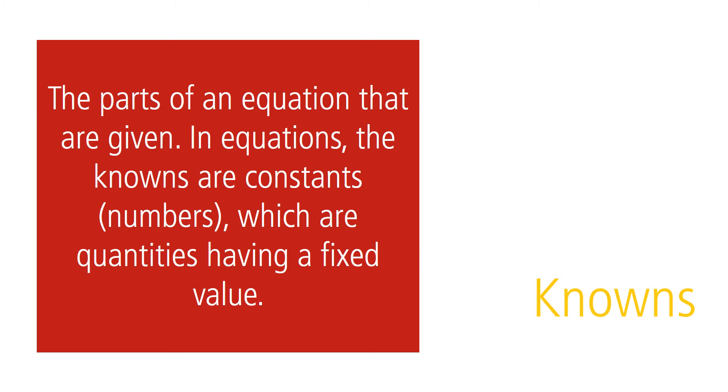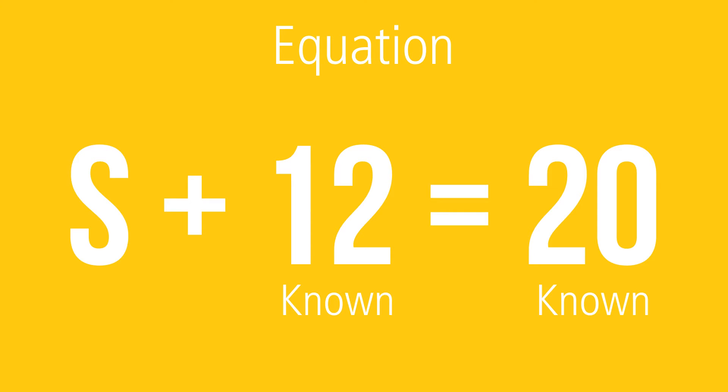Constants, or knowns, are the parts of the equation that are given. In equations, the knowns are constants, numbers which have quantities having a fixed value. In our example, the 12 and the 20 are constants, or knowns.